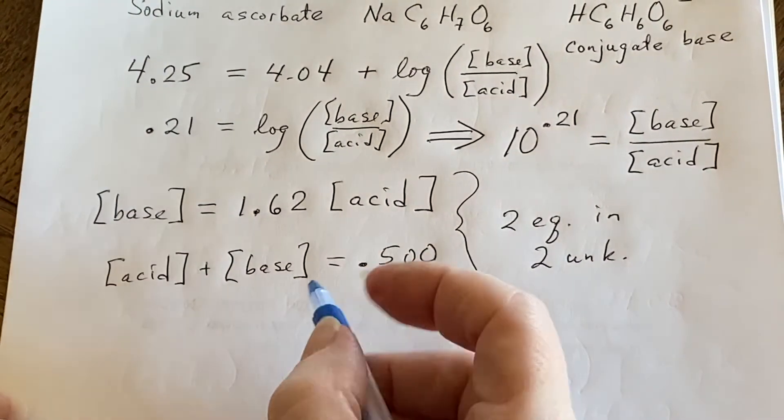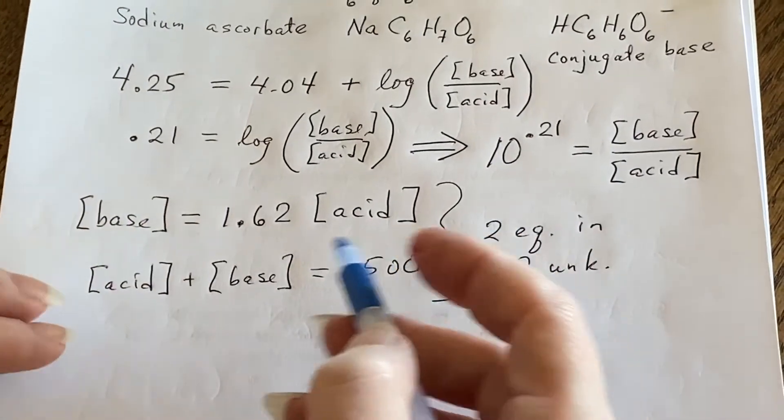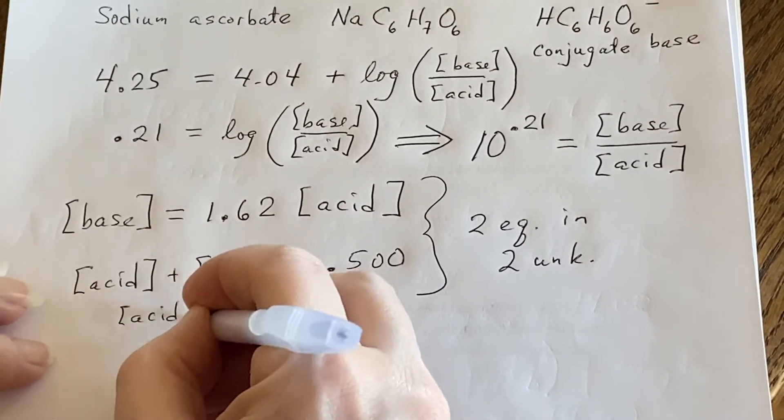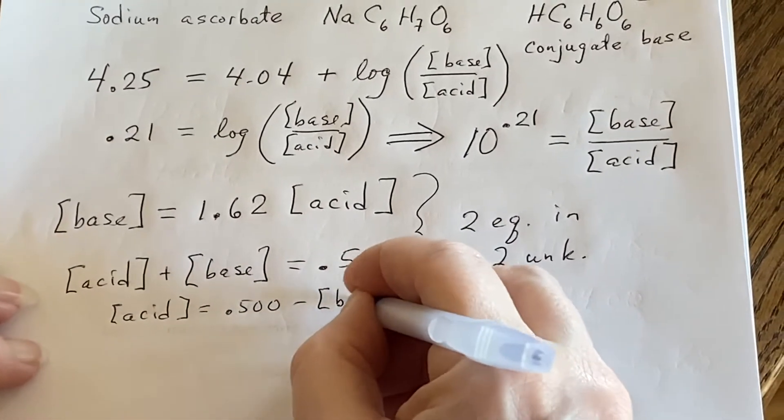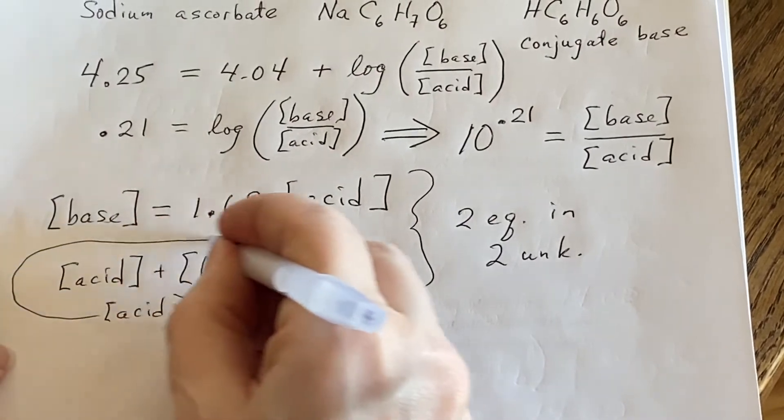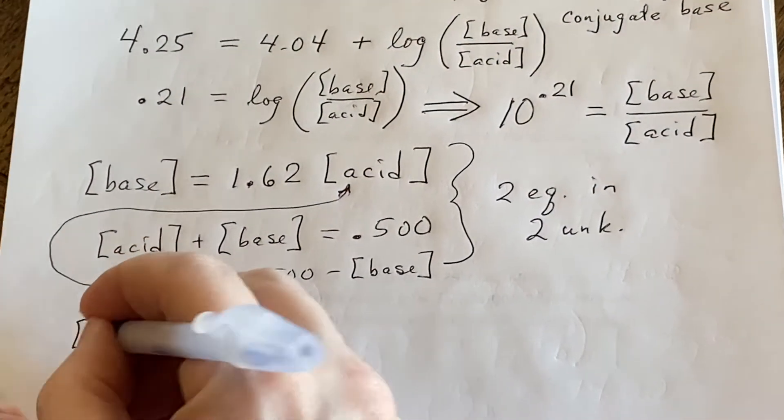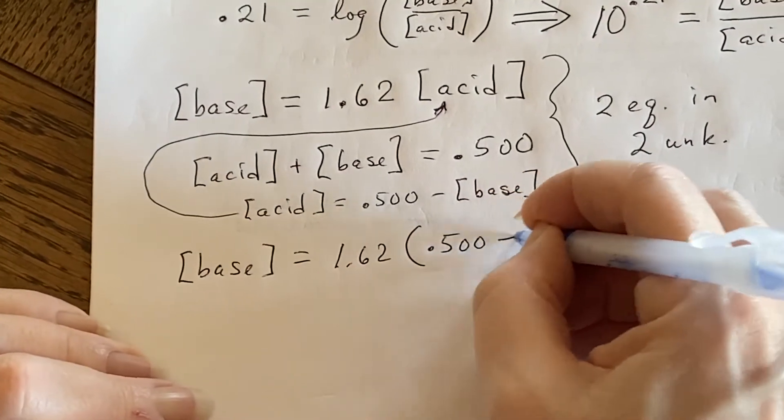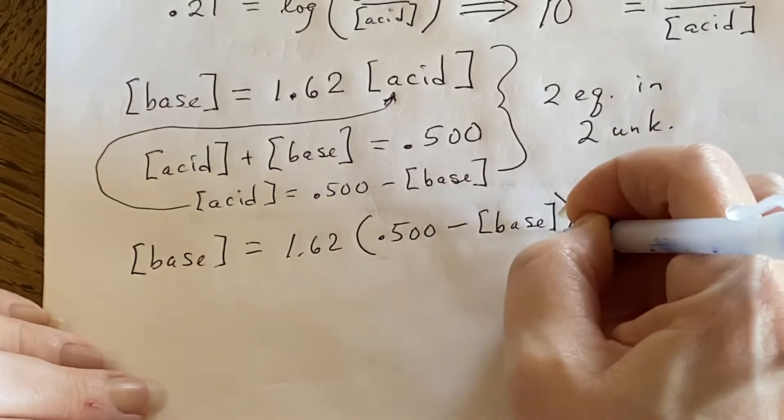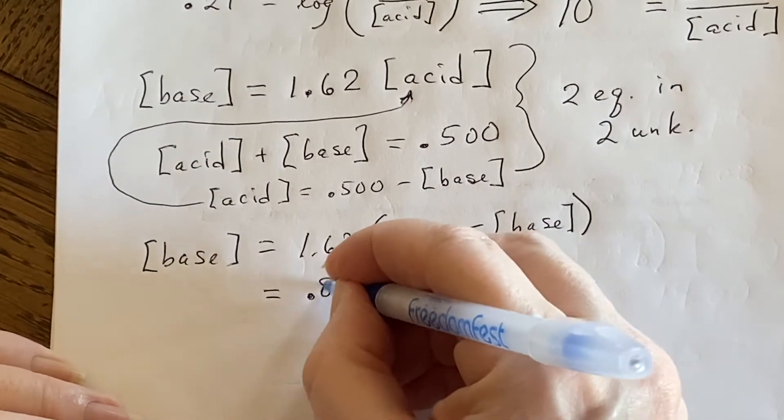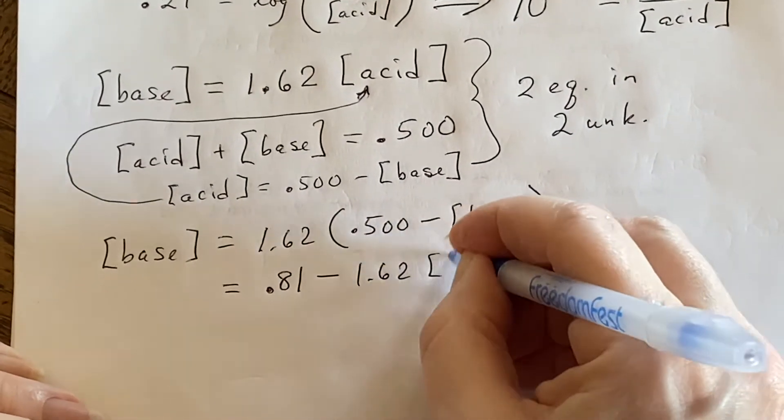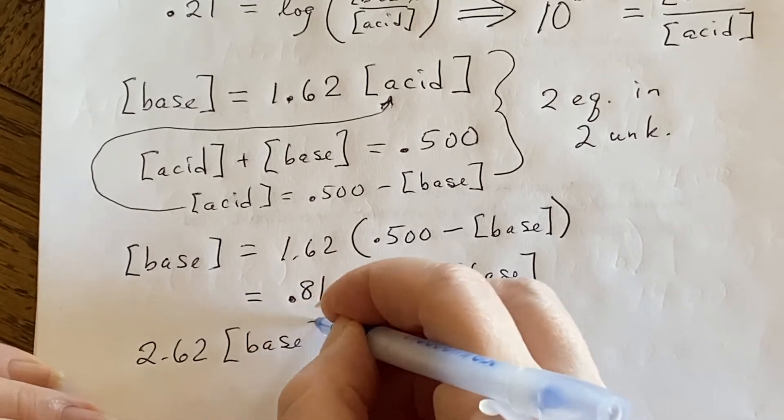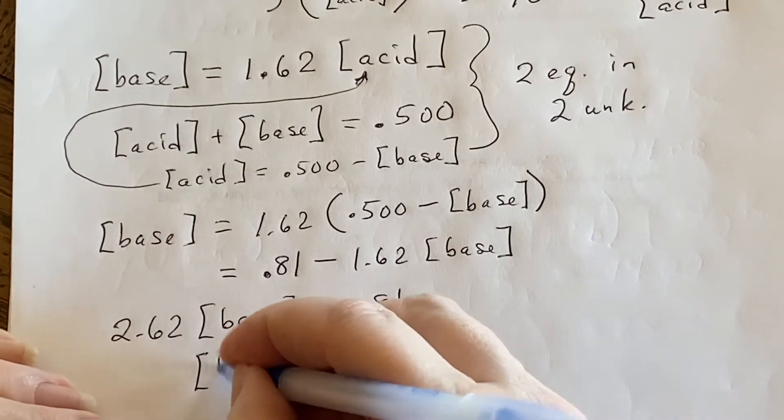All right. If I start doing that, then I can say, all right, you know what, let me use a substitution to do this. I'll go ahead and I will say that the concentration of acid then is 0.500 minus the concentration of base. And I will put this piece of information in right here. When I do that, then I find out base concentration equals 1.62 times 0.500 minus the base concentration. This ends up being 0.81 minus 1.62 base concentration. Which means you're going to get 2.62 concentration of base equals 0.81.